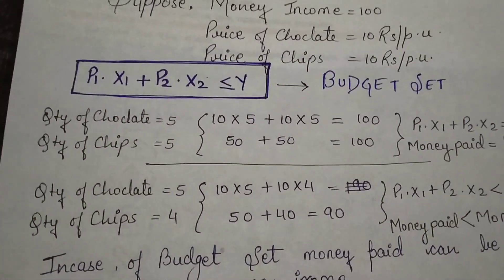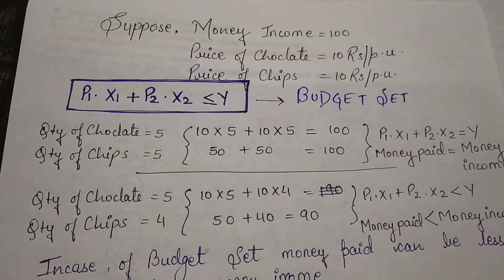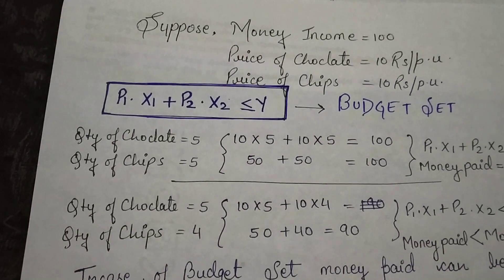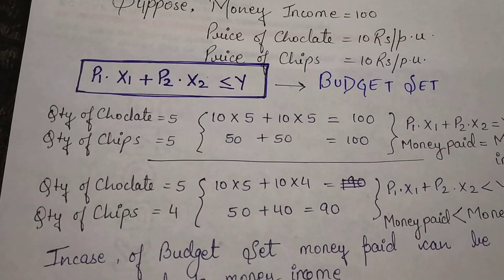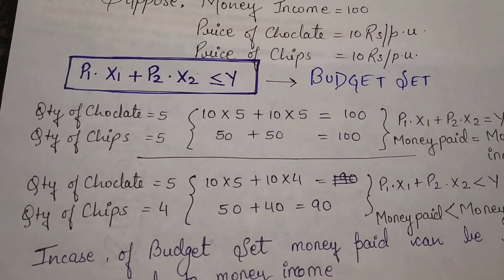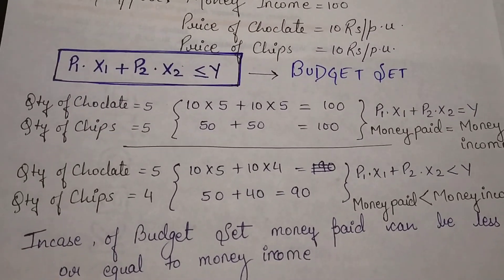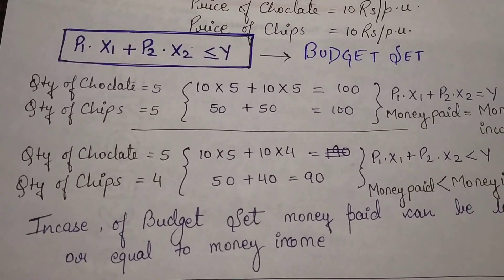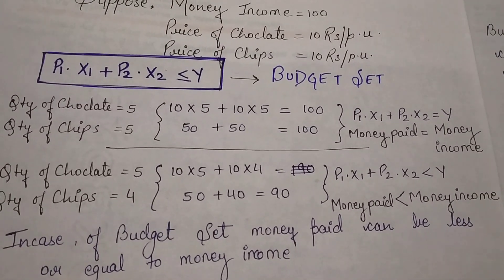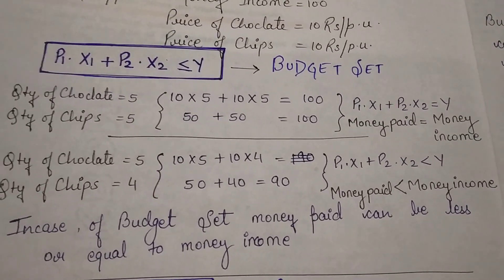Suppose your money income is 100 and you have to purchase two commodities: chocolates and chips, both priced at 10 rupees. The budget set equation is p1 into x1 plus p2 into x2, less than or equal to y. First condition: quantity of chocolate 5 units, quantity of chips 5 units - 10 into 5 plus 10 into 5 equals 100, so money paid equals money income. Second condition: chocolate 5 units, chips 4 units - 10 into 5 plus 10 into 4 equals 90, money paid is less than money income.